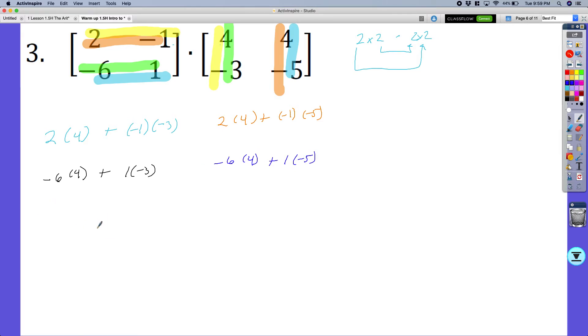So when I get all these then, guys, and I'm going to solve them, I'm going to get 8 plus 3, which is 11. Negative 24 plus negative 3, which is negative 27. 8 plus 5, which is 13.